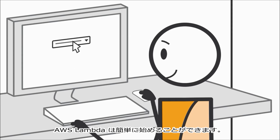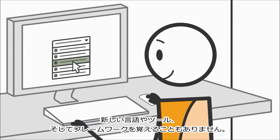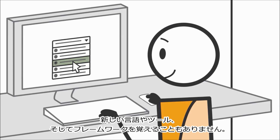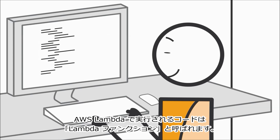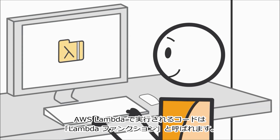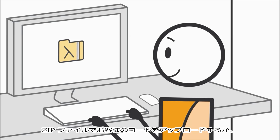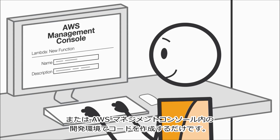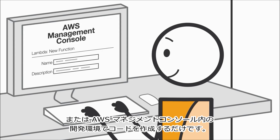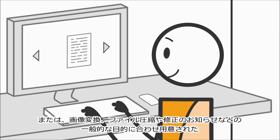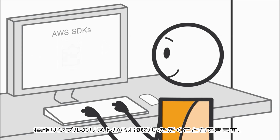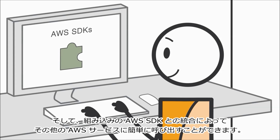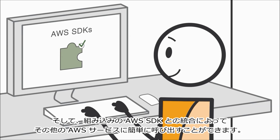Getting started with AWS Lambda is easy. There are no new languages, tools, or frameworks to learn. You can use any third-party library, even native ones. The code you run on AWS Lambda is called a Lambda function. You just upload your code as a zip file or design it in the integrated development environment in the AWS Management Console. Or you can select from a list of function samples pre-built for common use cases such as image conversion, file compression, and change notifications. And built-in support for the AWS SDK makes it easy to call other AWS services.